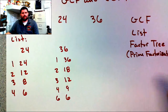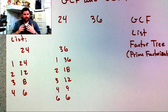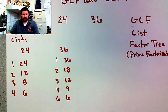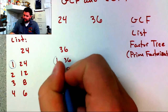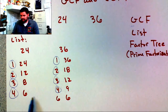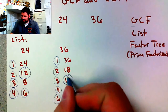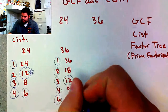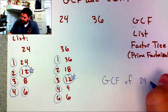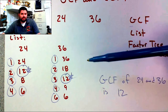Now I'm going to circle all the factors that each of these share, but what I'm looking for is the greatest factor they share — thus, greatest common factor. They both share 1, 2, 3, 4, 6, and 12. They don't share 8. So the greatest shared factor is 12, meaning the GCF of 24 and 36 is 12.